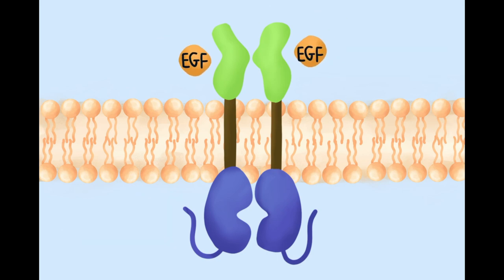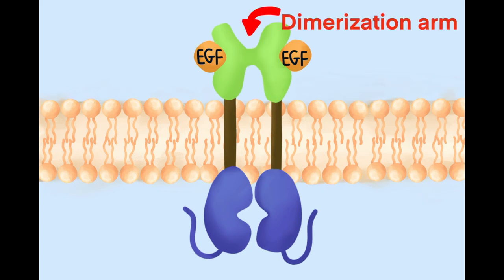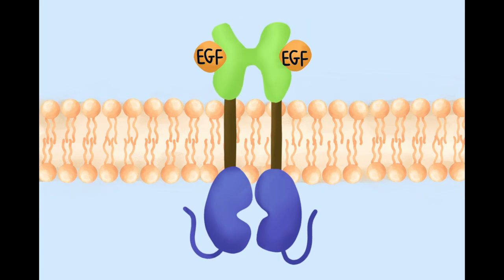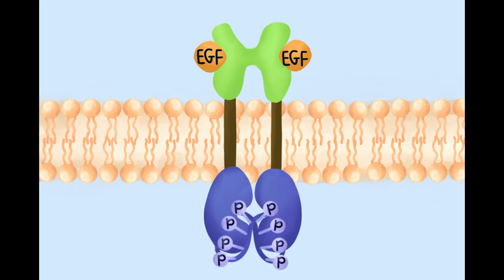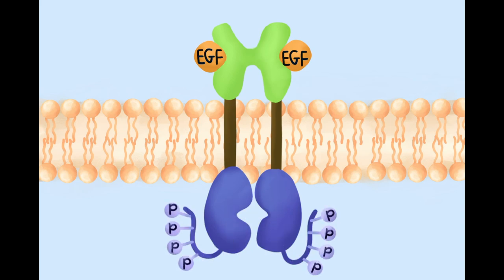When one EGF binds to each of the binding sites, the extracellular parts of the monomers stretch towards each other, creating a dimerization arm. The C-terminus tails of one monomer enter the active site of the tyrosine kinase domain on the opposite monomer and are phosphorylated.